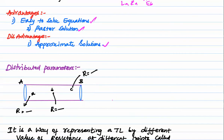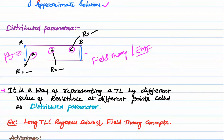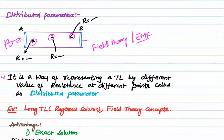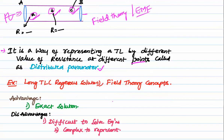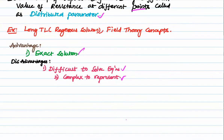Next we will see distributed models or distributed parameters. In distributed models, waves are sent into the conductor to find the value of resistance at particular points — this is possible using field theory or electromagnetic fields. It is defined as a way of representing a transmission line by different values of resistance at different points. Examples in power systems include transmission line models, and filter concepts such as designing of antennas and filters. The advantage is an exact solution. The drawback is that equations are difficult to solve and complex to represent.